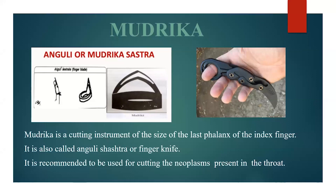Anguli or Mudrika Shastra is a cutting instrument of the size of the last phalanges of the index finger. It is also known as the finger knife and is recommended for cutting neoplasms present in the throat.